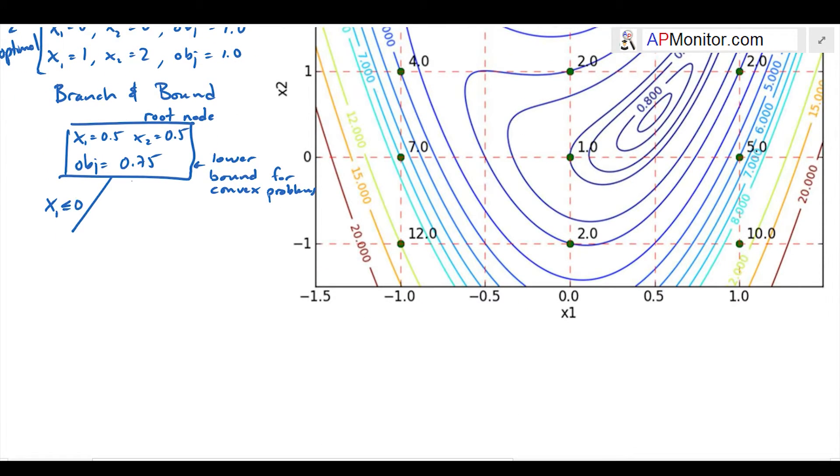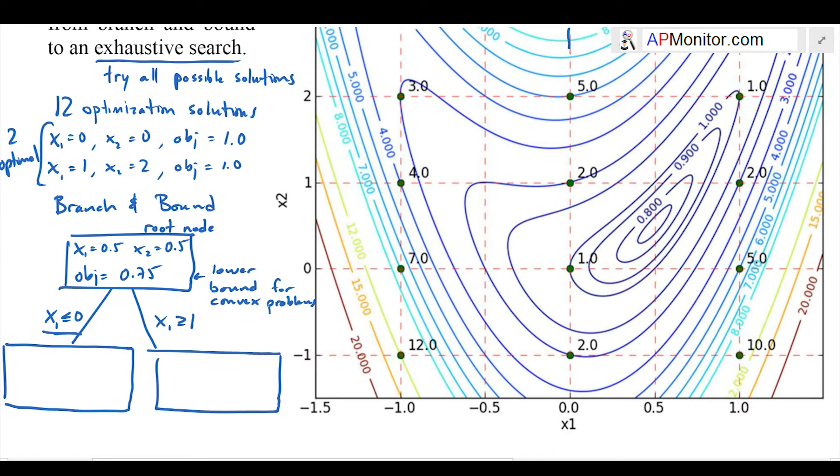Then I'm going to begin branching. First I'll select x1 as the first variable to branch on. I'm going to say that x1 is less than or equal to 0. I'm going to solve that one first. My solution goes from the optimal to the new point that's less than or equal to 0, and that's x1 equals 0, x2 equals 0.